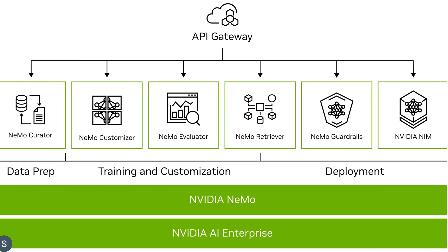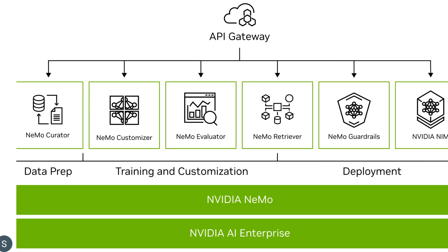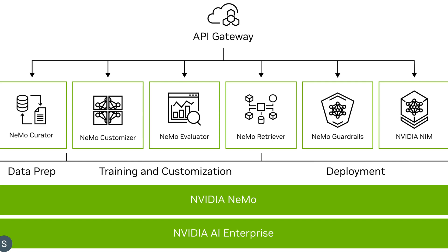This diagram shows a list of key features organized into three main categories: data preparation, training and customization, and deployment. On the data preparation side, we have Nemo Curator. For training and customization, we have Nemo Customize, Nemo Evaluator, and Nemo Retriever. Finally, for deployment, we have Nemo Guardrails and NVIDIA NIM. These are the main features of the overall Nemo framework.